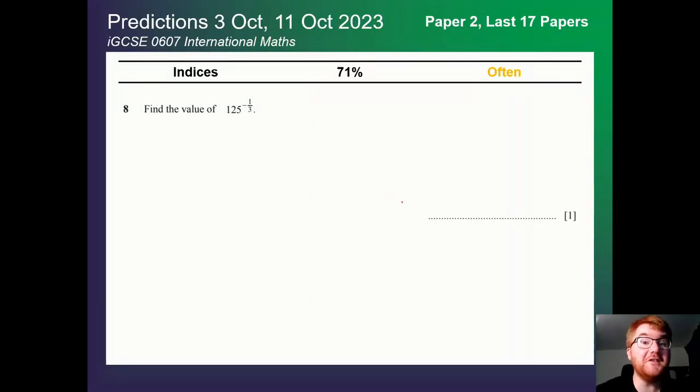Hello and welcome to another Ginger Mathematician video. This time I'll be predicting the IGCSE 0607 International Maths Papers on the 3rd of October and the 11th of October 2023.